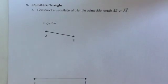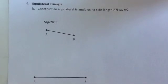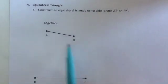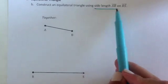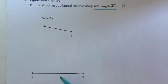In construction 4 we are constructing an equilateral triangle given segment AB and ray RS. Our goal is to construct an equilateral triangle using side length AB on top of RS.